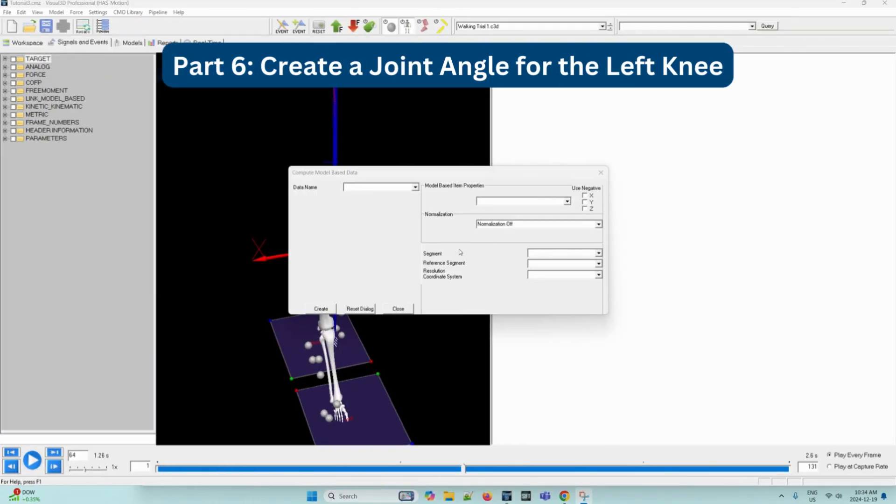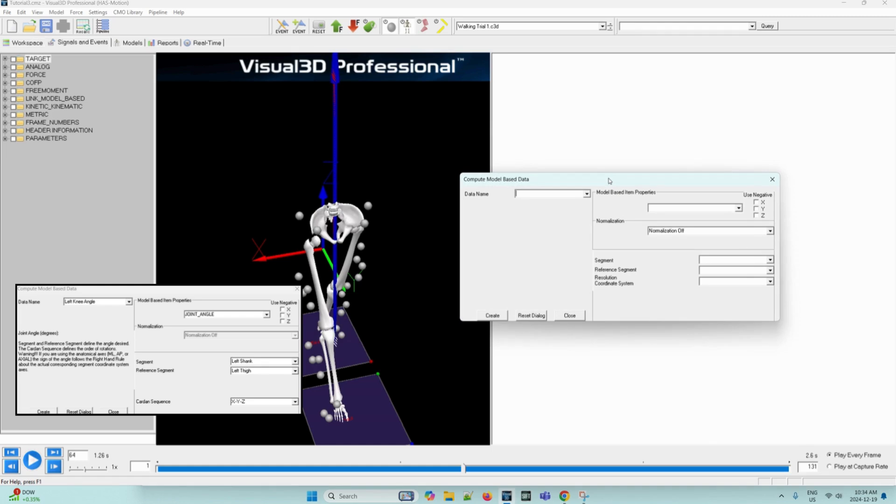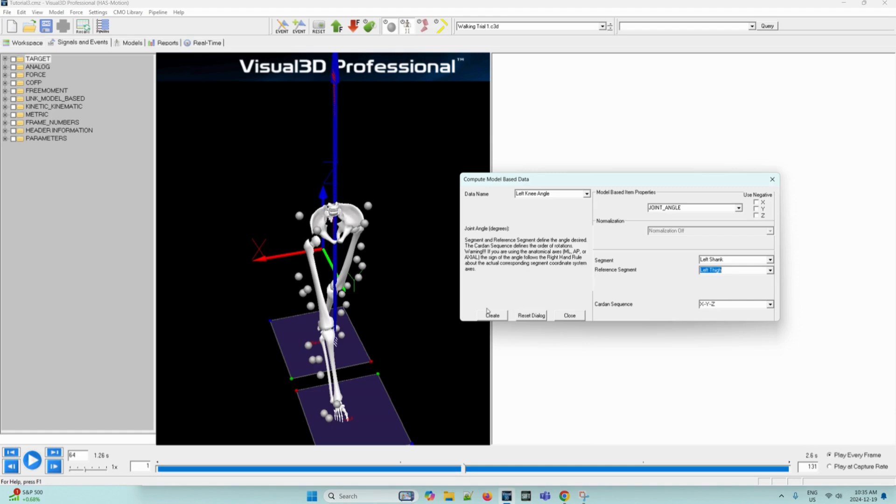Now in the same dialog box, we will be creating the joint angle for the left knee. We can enter the information seen in the image displayed. This will be the corresponding left side parameters to the previously created right knee angle. In the data name box, we can fill it out as left knee angle. And in the model based item properties box, we can select joint angle from the drop down. We can leave the normalization as off. And then the segment will be left shank. And then the reference segment will be left thigh. The Cardan sequence can stay as XYZ. And then we can select Create.